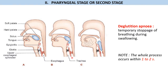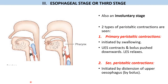Just before the bolus enters the esophagus, the otherwise tightly closed upper esophageal sphincter relaxes and opens to allow bolus entry. Once the bolus enters the esophagus, the vocal cords open again and normal breathing resumes. The entire pharyngeal phase is completed within one to two seconds, so deglutition apnea goes unnoticed by the person.